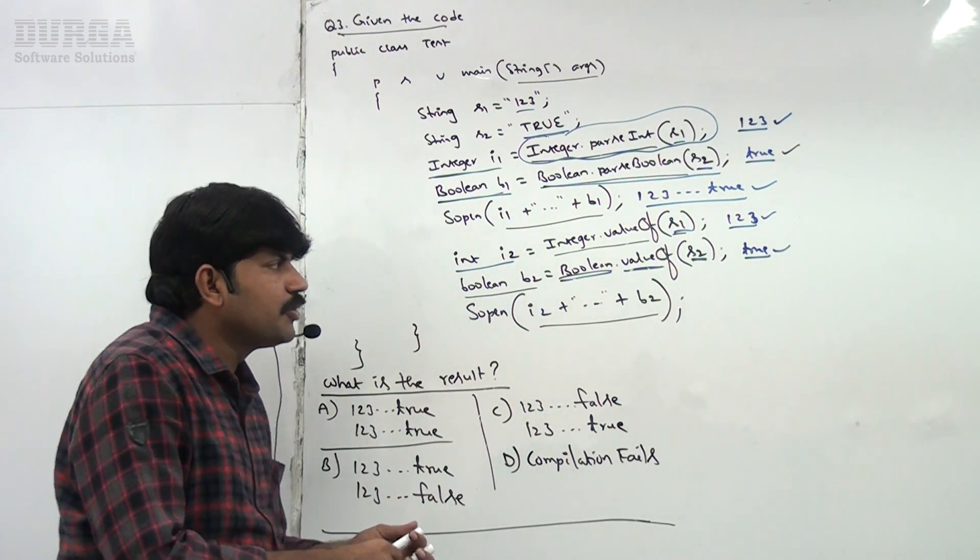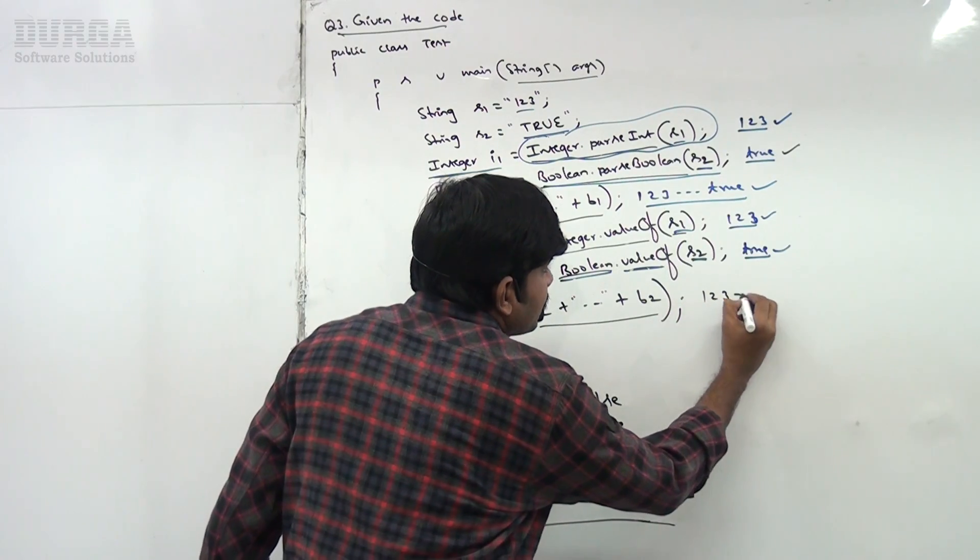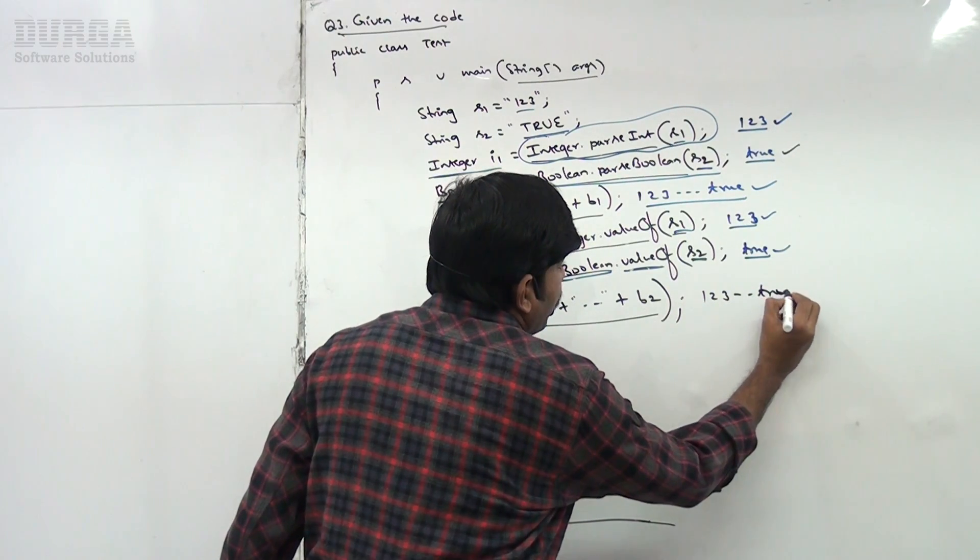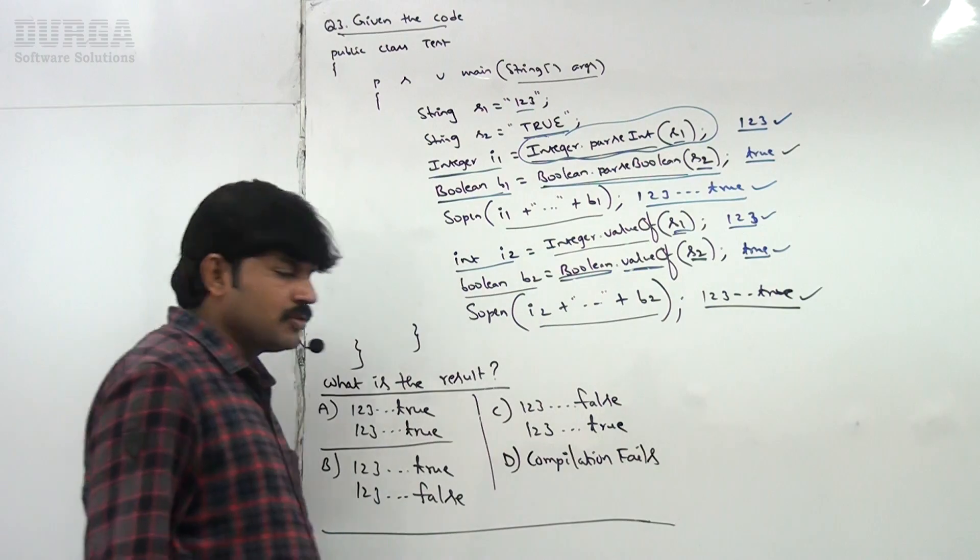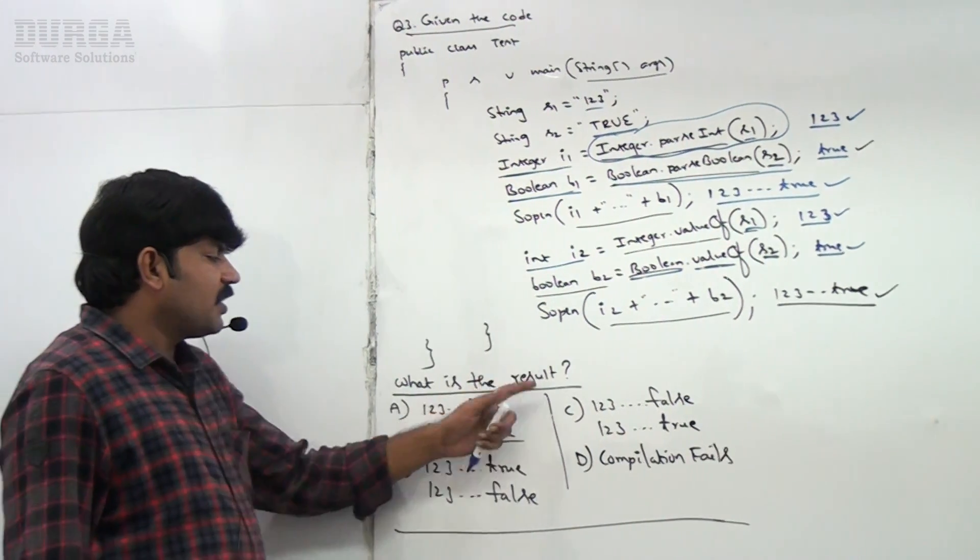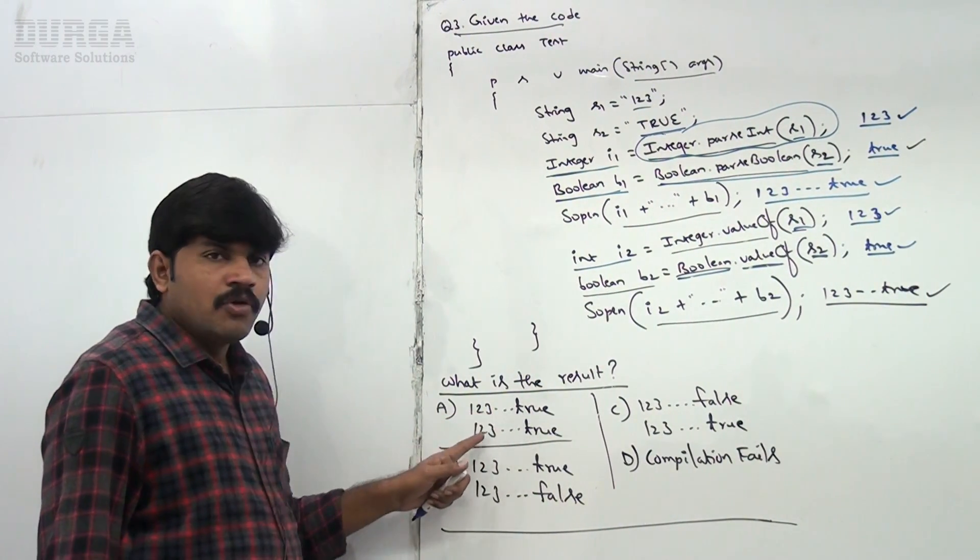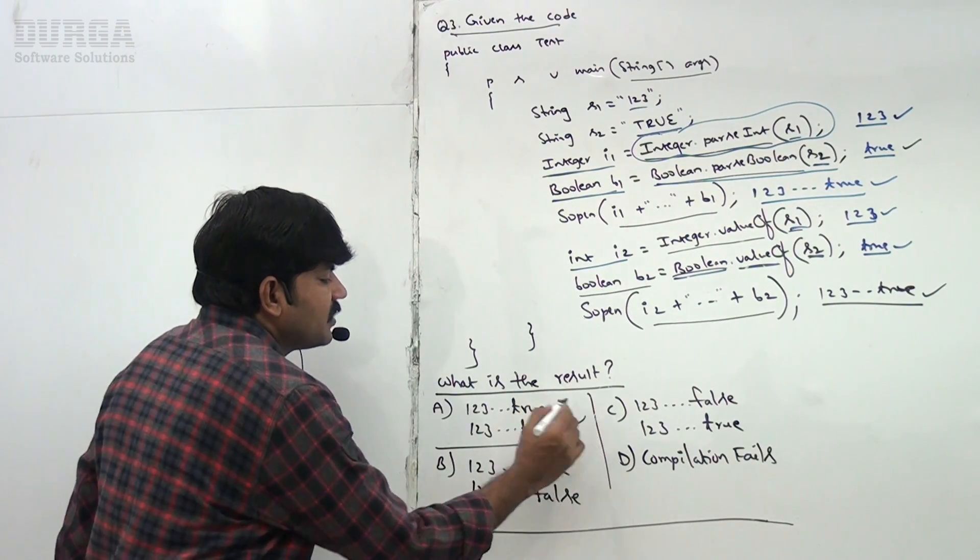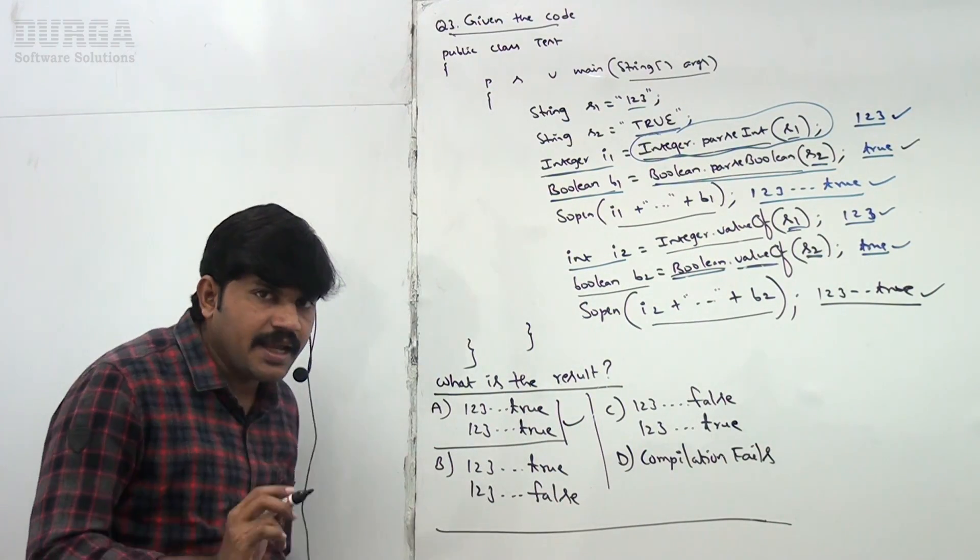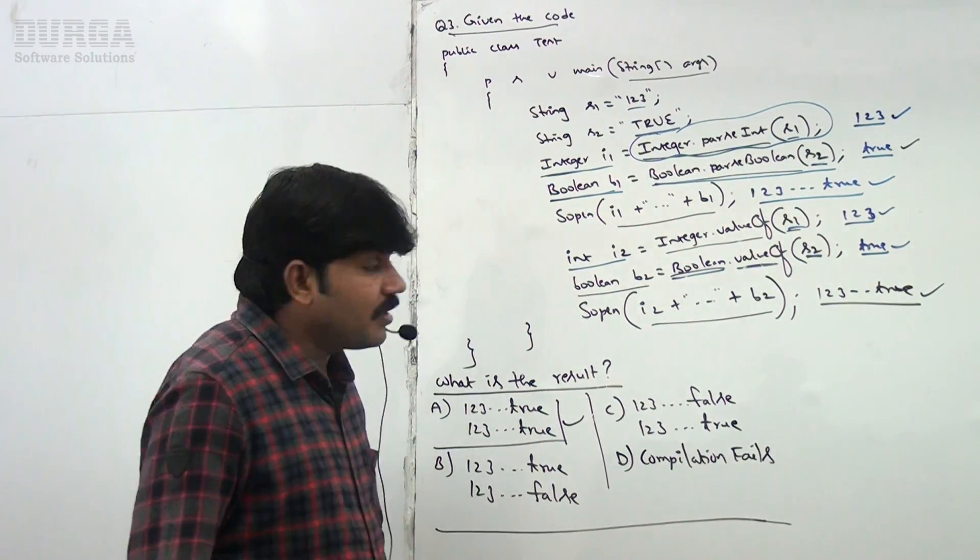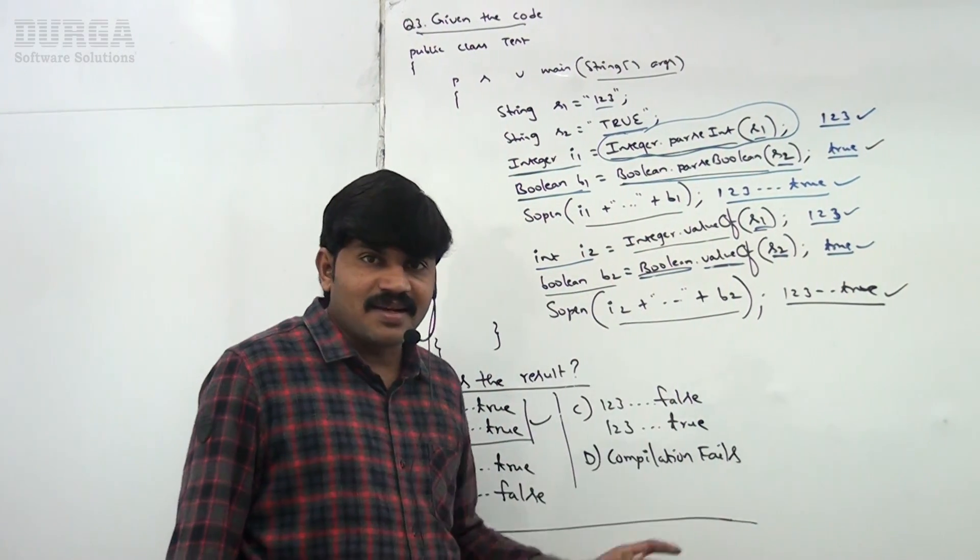i2 dot dot dot b2 means again the answer is 123 followed by true itself is the answer. So can you please spell out what is the results are? 123 true, 123 true in both cases you can get. So A itself is the answer sir. Observe if you want to understand this bit.